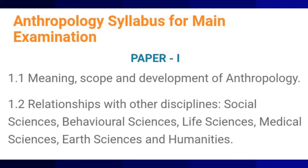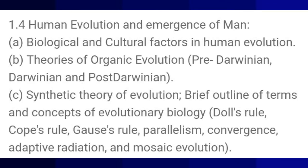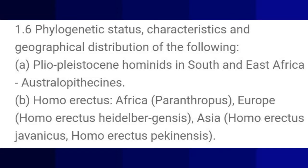First is Meaning, Scope and Development of Anthropology. Second is Relationship with Other Disciplines. 1.3 Main Branches of Anthropology, their Scope and Relevance. 1.4 Human Evolution and Emergence of Man. 1.5 Characteristics of Primates. 1.6 Phylogenetic Status, Characteristics and Geographical Distribution of the following.